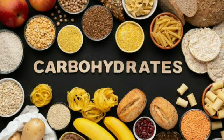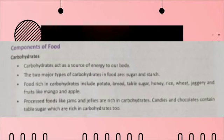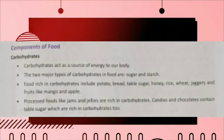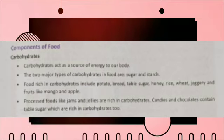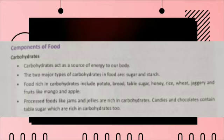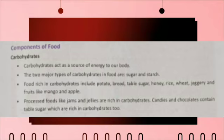Now let us discuss carbohydrates. Carbohydrates act as a source of energy to our body, that's why they are known as energy giving food. Carbohydrates are of two types: sugar and starch. Foods which are rich in carbohydrates are honey, rice, wheat, jaggery, potato, etc.